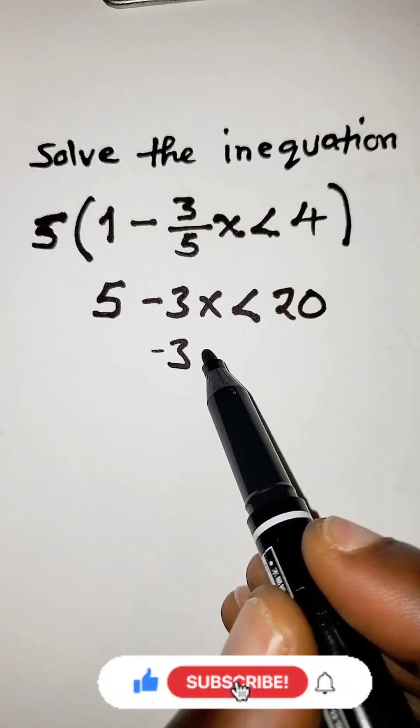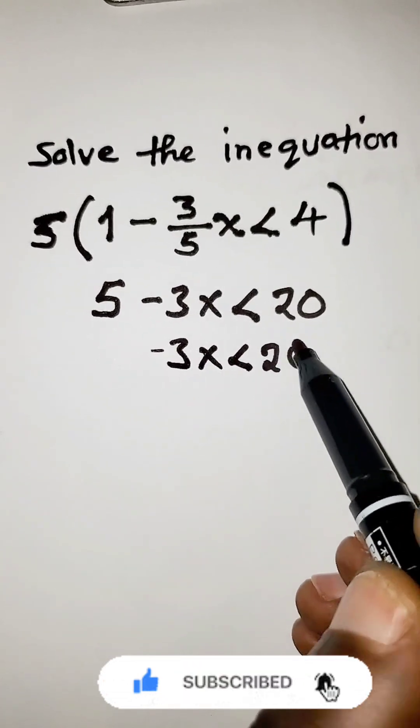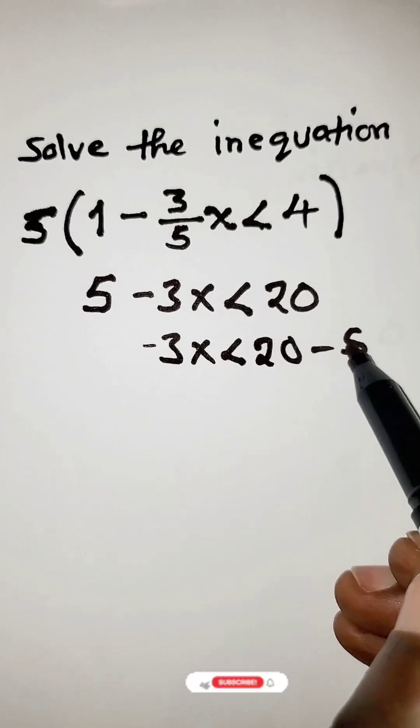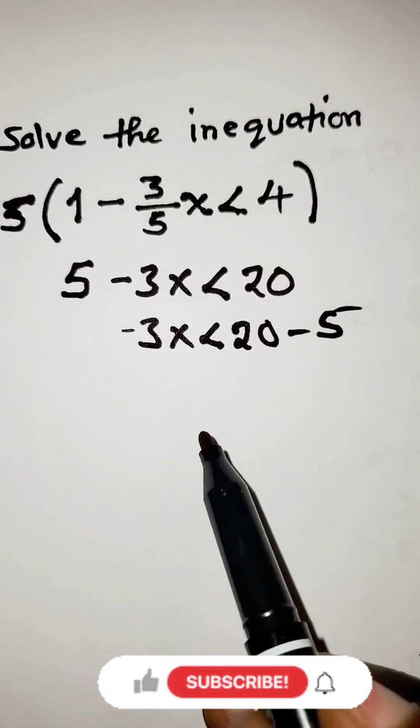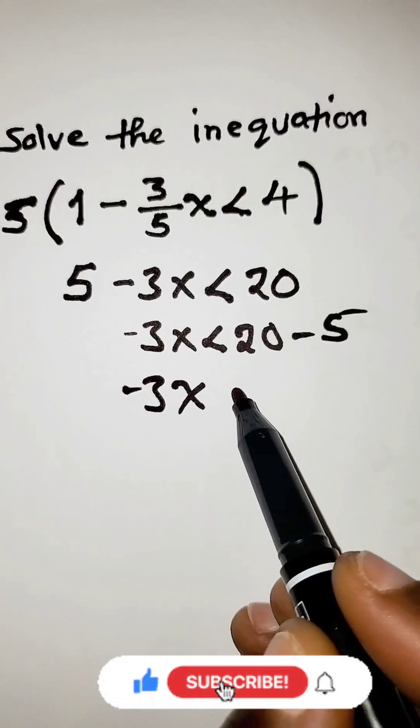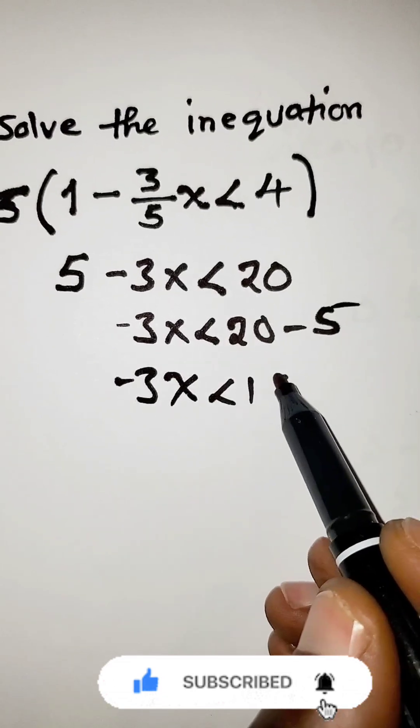We can have negative 3x is less than 20, the 5 crosses becomes minus 5. Then negative 3x is less than 20 minus 5 is 15.